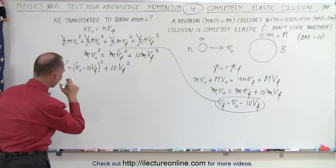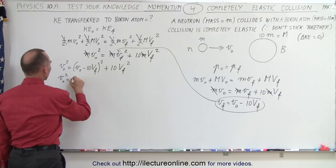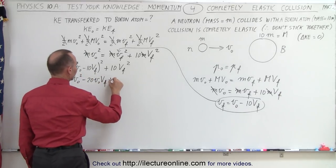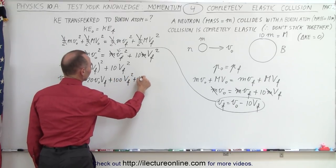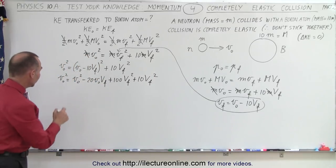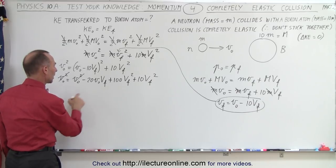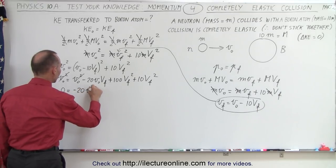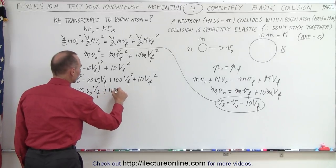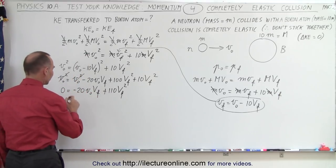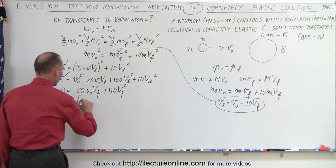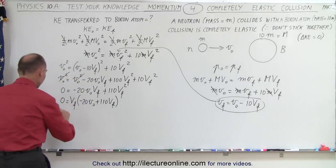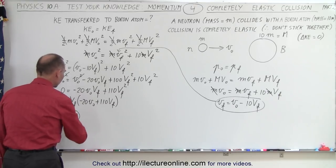Expanding everything out: V_initial² equals V_initial² minus 20·V_initial·V_final plus 100·V_final² plus 10·V_final². Subtracting V_initial² from both sides, we end up with 0 equals minus 20·V_initial·V_final plus 110·V_final². Factoring out V_final gives 0 equals V_final times (minus 20·V_initial plus 110·V_final), leaving two possible solutions: V_final equals 0, which is unlikely, or the bracket term equals zero.